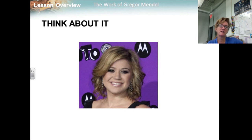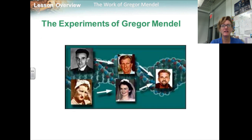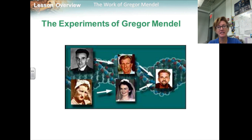What kind of inheritance makes a person's face round or hair curly? Every living thing — plant, animal, microbe, or human being — has a set of characteristics inherited from its parent or parents. The delivery of characteristics from parent to offspring is called heredity. The scientific study of heredity, known as genetics, is the key to understanding what makes each organism unique.